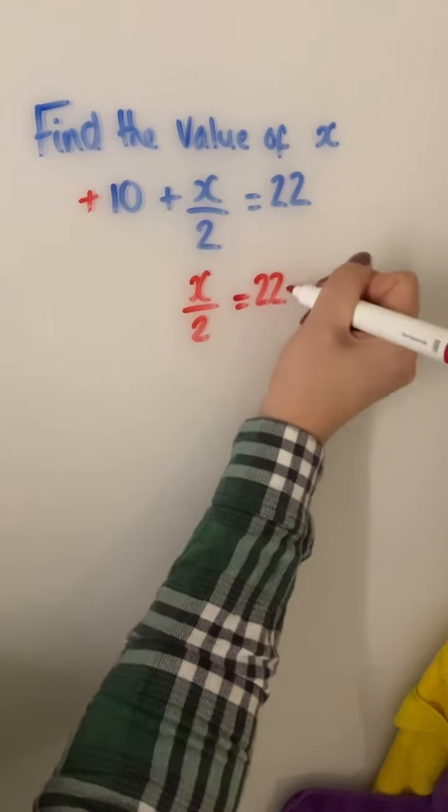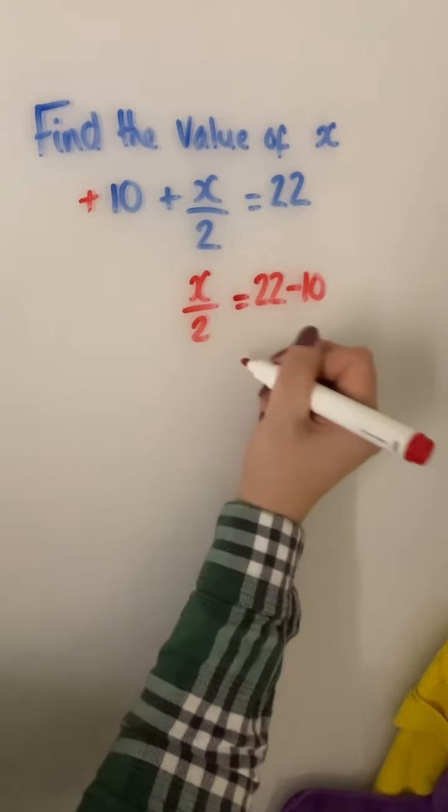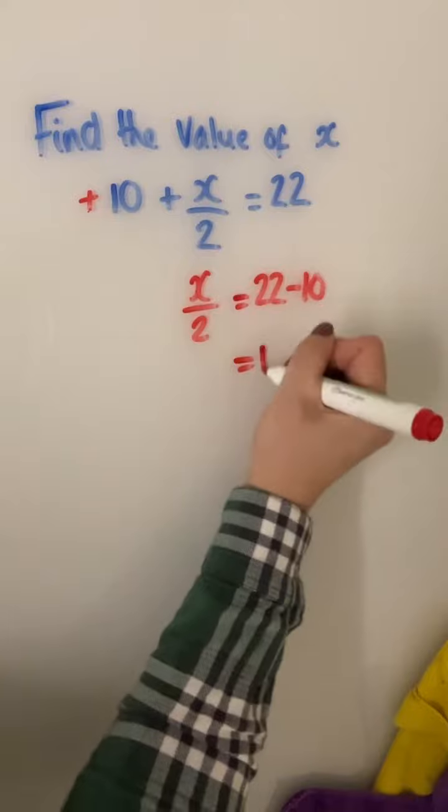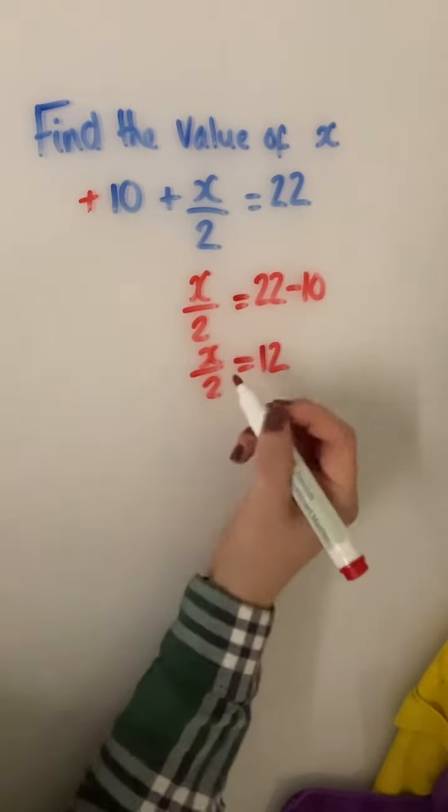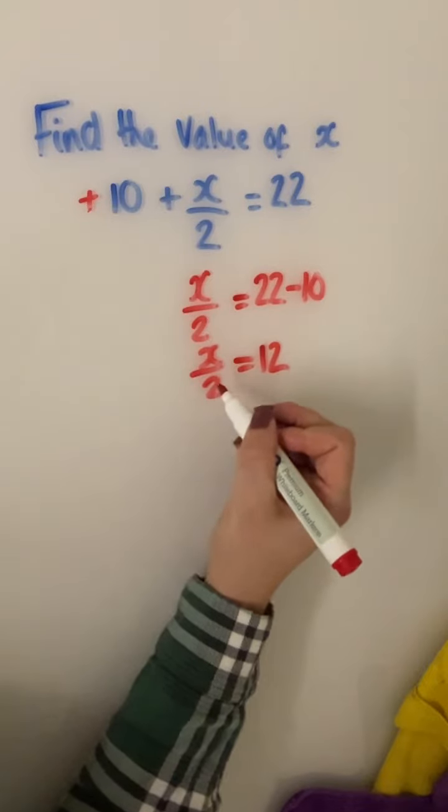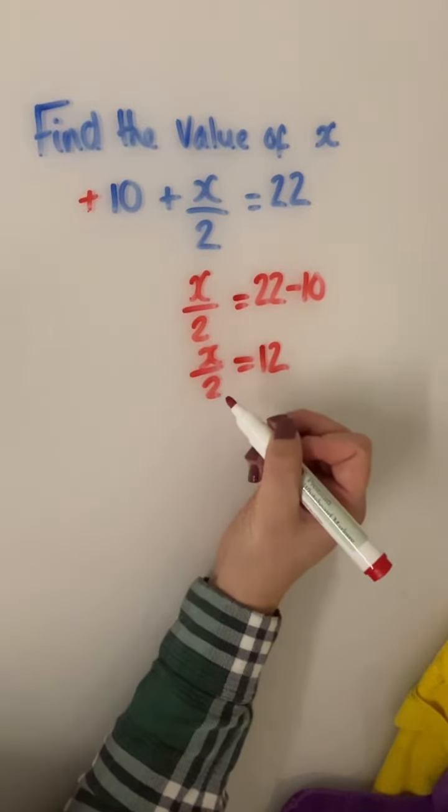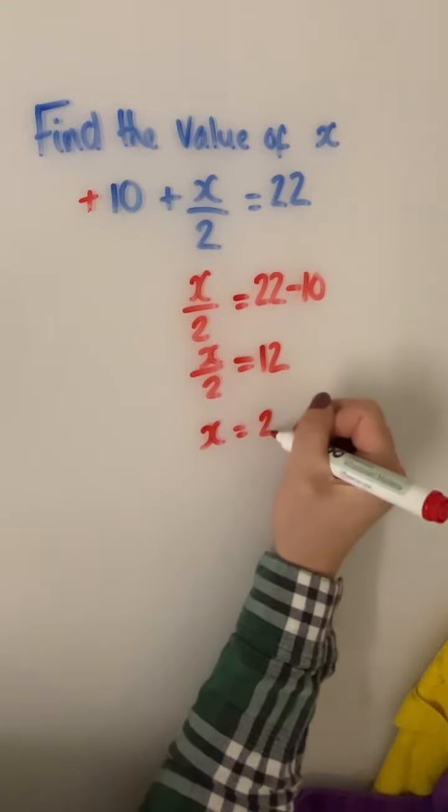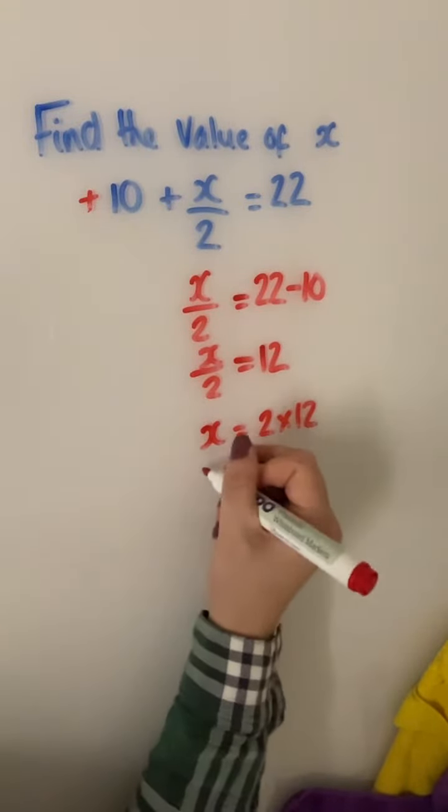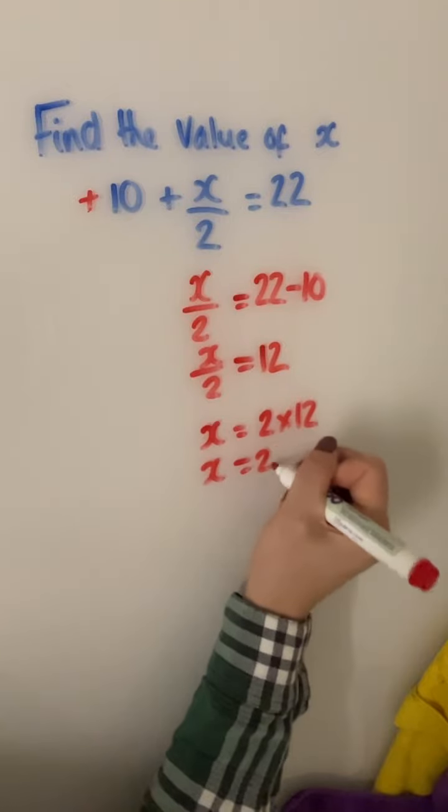But we're going to do 22 subtract 10. 22 subtract 10 is 12, and we've still got the x divided by 2 to deal with. Now with the division of 2, the opposite of dividing is to multiply, so we need to have x equals and we take the 2 over, so it'd be 2 multiplied by 12. So x equals 24.